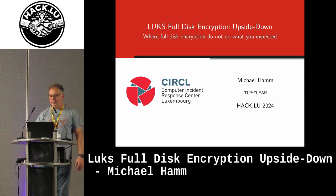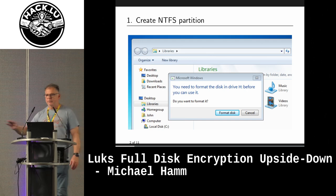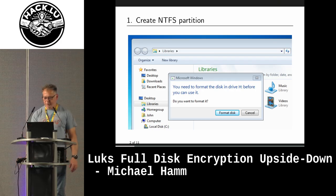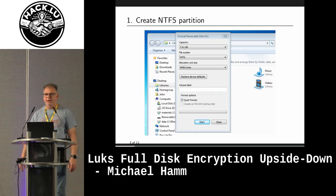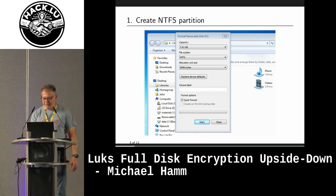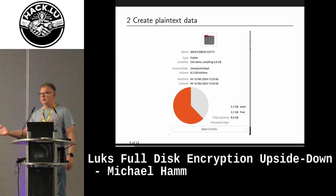I took a USB stick and completely wiped it because I don't want to interfere with old data. Then I connected it to a Windows machine — Windows wants to format the disk. I left all the default settings, only switching from FAT32 to NTFS. Then I put data on it: about five gigabytes on an eight gigabyte USB key.